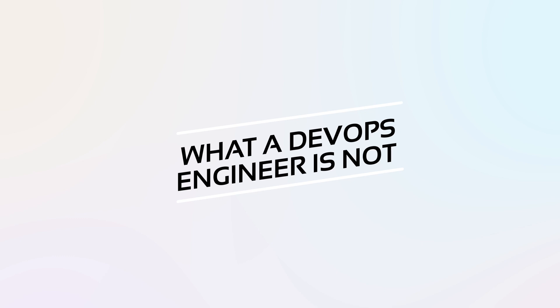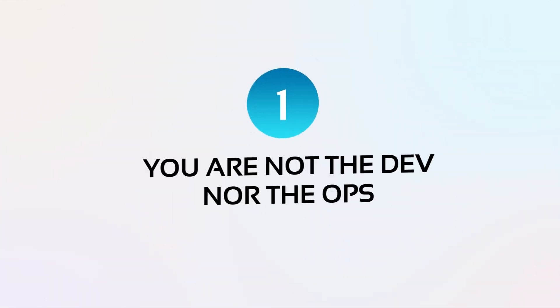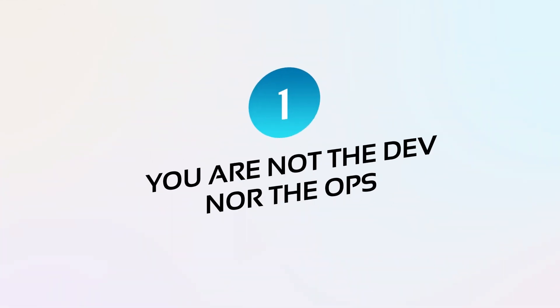Now let's discuss what a DevOps engineer is not. The definition of DevOps as a practice may be vague in some ways, but it doesn't mean there are no limitations. You are not the dev nor the ops. A DevOps engineer's focus should be on improving processes between teams and improving collaboration, whatever approach or implementation that may be. However, it doesn't mean that you will be working on the tasks for either of these teams. Set the expectations for both teams — communication is key.